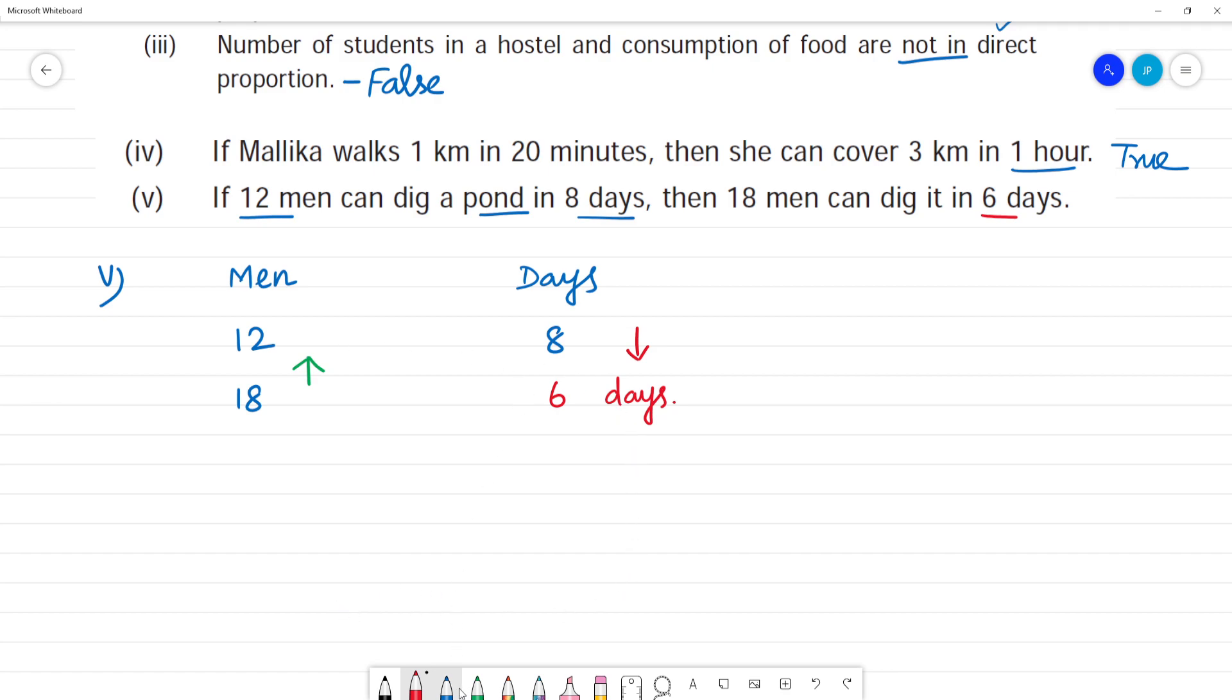Now this is indirect variation. What is indirect variation? Men increase - 12 and 18, men increase. Days decrease, so this is indirect variation.